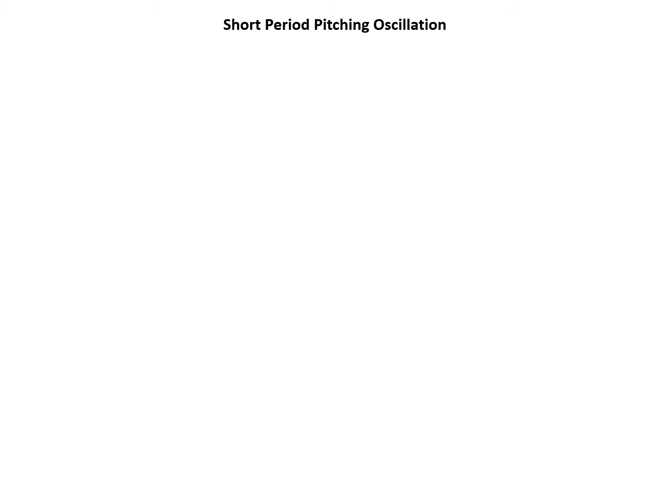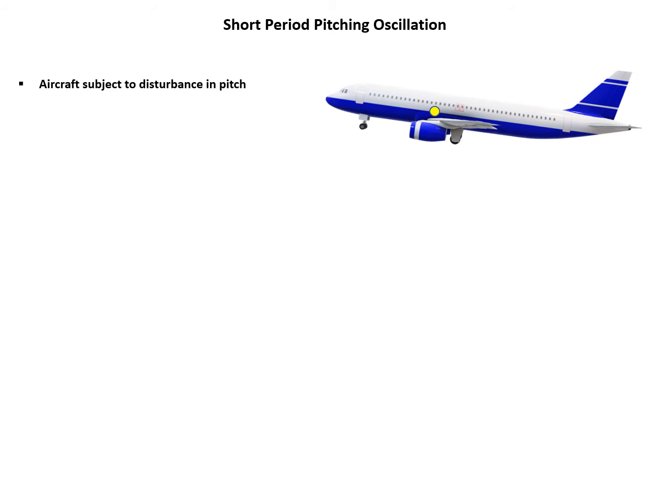And the first one is the short-period pitching oscillation for the longitudinal dynamic stability. So short-period pitching oscillation, let's first get familiar with this motion. So assume an aircraft as shown here, and it is subject to a disturbance in pitch.